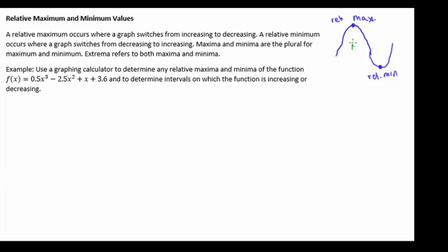For our example, we're going to use a graphing calculator to determine any relative maxima and minima of the function f(x) = 0.5x³ - 2.5x² + x + 3.6, and we're then going to use that to determine the intervals on which the function is increasing or decreasing.